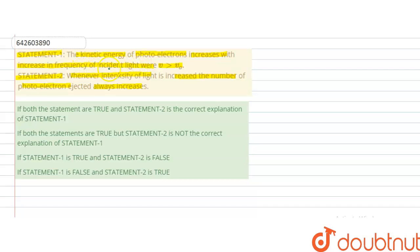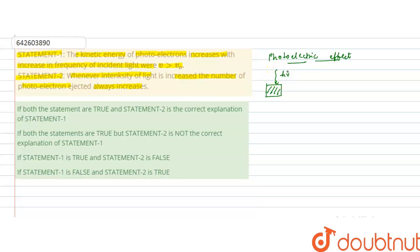Statement one relates to the photoelectric effect. In the photoelectric effect, when a metal surface is irradiated with incident light of frequency ν, the work function of the metal is hν₀. The incident frequency should be greater than the threshold frequency of the metal surface so that the electron will be ejected from the metal surface.